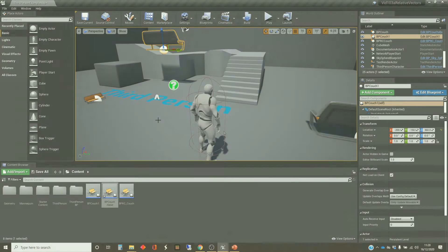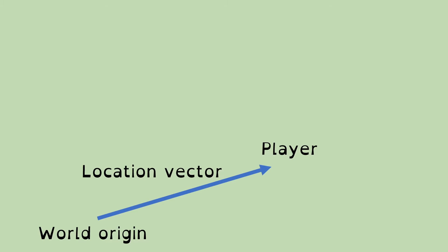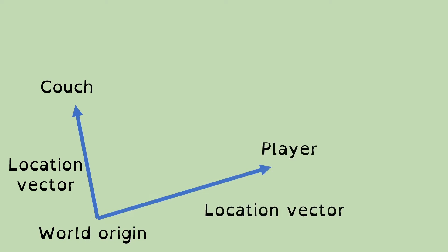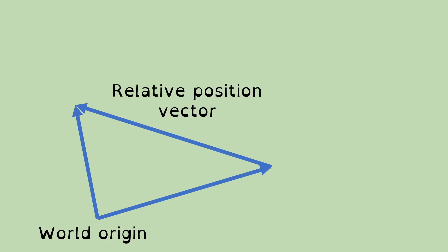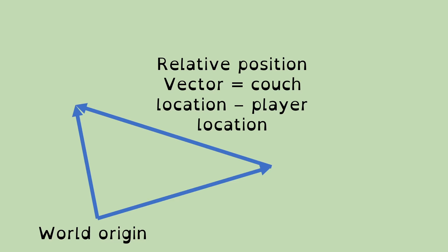So in order to do that, we're going to do a little bit of theory again. We want to find out what the vector is between the two objects — the player and the couch. We've got the world origin and the location vector of the player. We've also got a location vector of the couch. What we're wanting to find is the relative position vector between them. This is the opposite of what we did with the floating couch. The relative position vector is the couch location minus the player location.